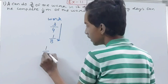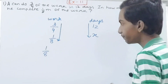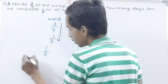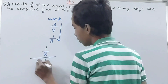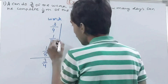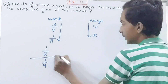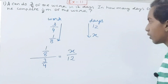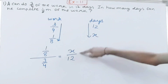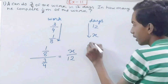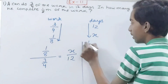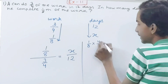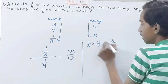Now I will put the numbers accordingly. We write one-eighth upon three-fourths — whatever is at the head of the arrow we write first — and here also x upon 12, from head to tail. So we set up: one-eighth divided by three-fourths equals x divided by 12.